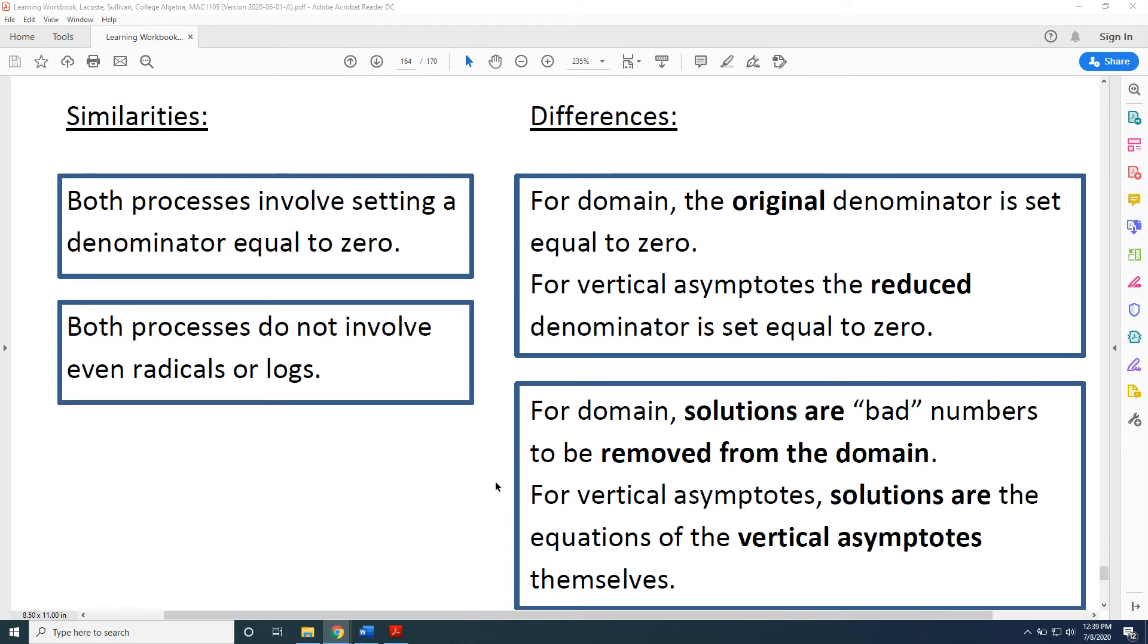Now to the differences. For domain, it is the original denominator that is set to zero, but for vertical asymptotes it is the reduced denominator that is set equal to zero.